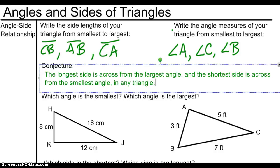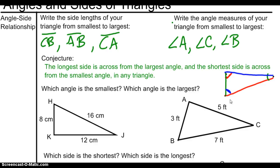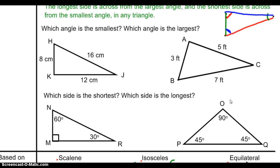I think I'm ready to write a conjecture: the longest side is across from the largest angle, the shortest side is across from the smallest angle, and the medium side is across from the medium angle — in any triangle. And in fact, that conjecture is a theorem. That is always true. If you've got yourself three different colors, you can draw a little picture to illustrate that.